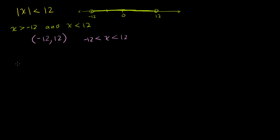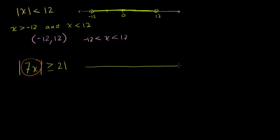Now let's do one that's a little bit more complicated. Let's say we have the absolute value of 7x is greater than or equal to 21. Let's not even think about what's inside the absolute value sign right now. In order for the absolute value of anything to be greater than or equal to 21, whatever's inside the absolute value sign must be 21 or more away from 0. Let's draw our number line — you really should visualize a number line when you do this and you'll never get confused. So let's draw 0 here, positive 21, and negative 21.